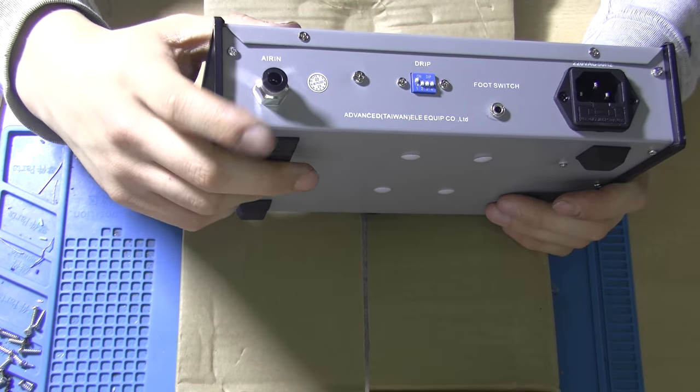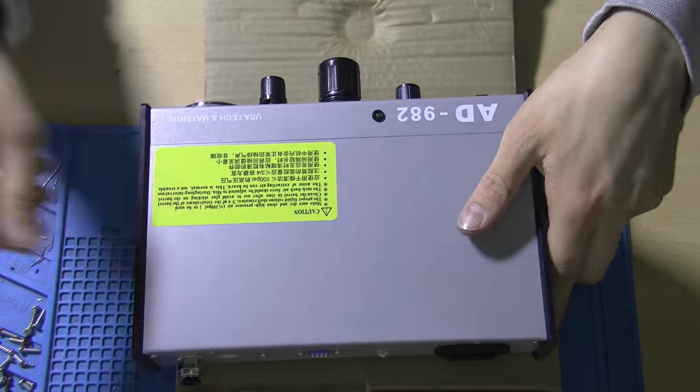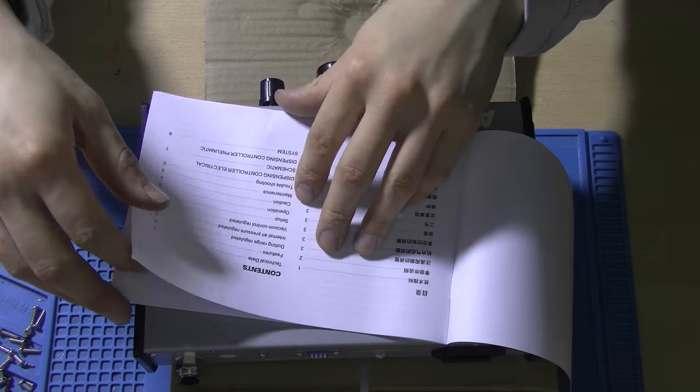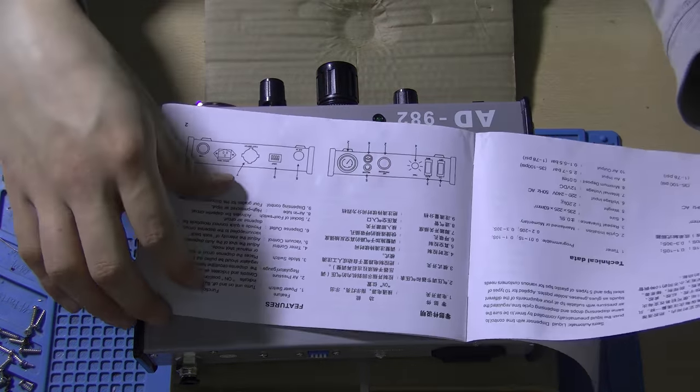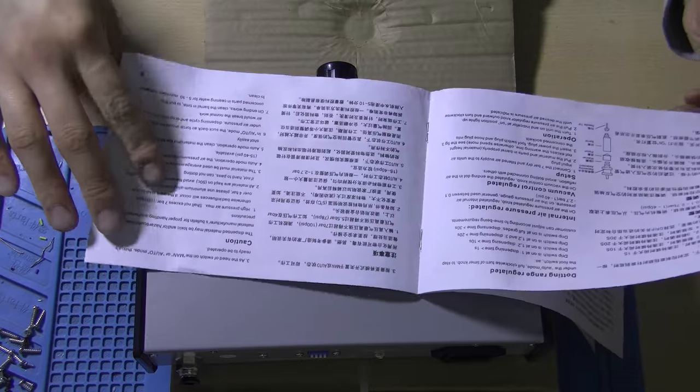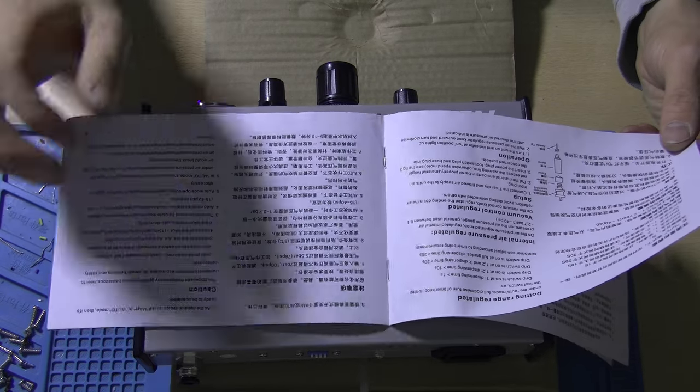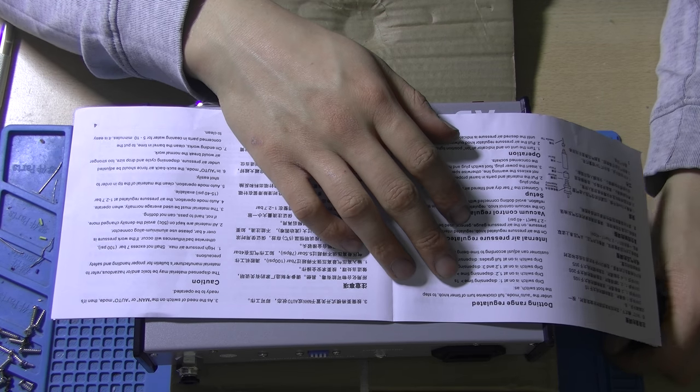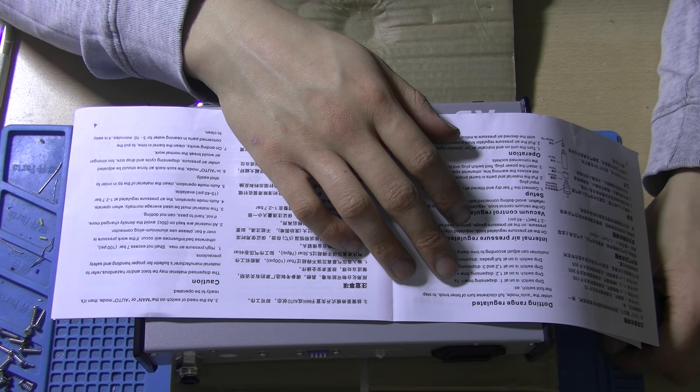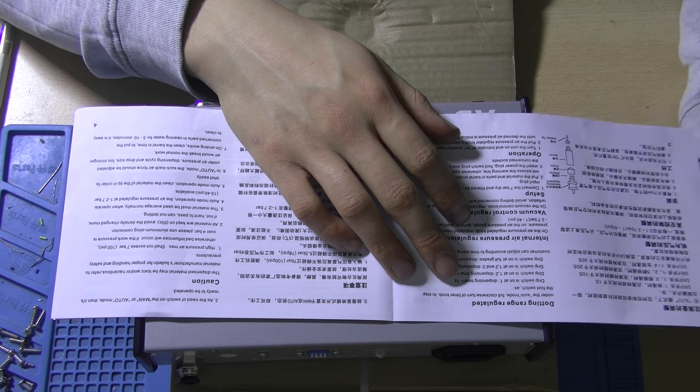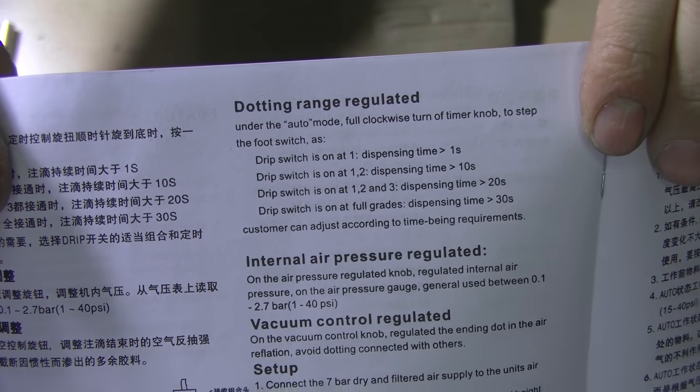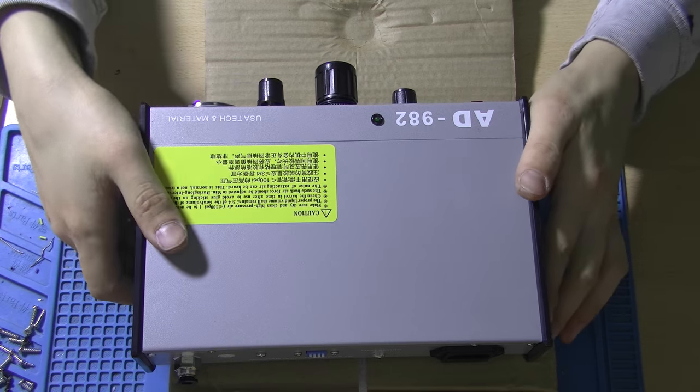And these are the drip settings. I think that the dip switch selections are written out in the manual. Yeah, there you go. Dip switch. Dip drip switch, that's quite a mouthful. So the dip drip switch is written out over here in the manual.